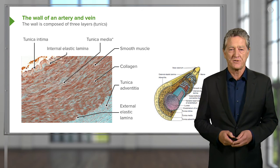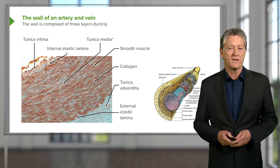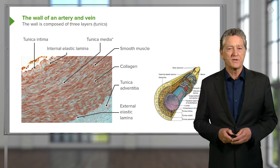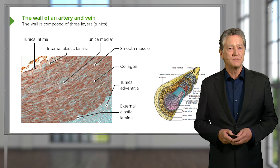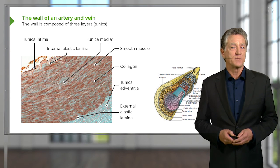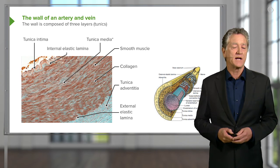There is also elastic tissue there, but in minimal amounts. And all these three components help to enable the blood vessel wall to relax or contract because of the presence of smooth muscle that I explained earlier.